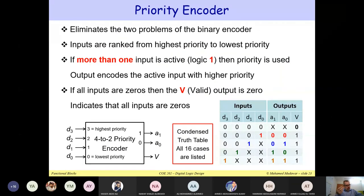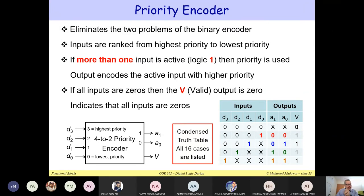In order to resolve these two problems of the encoder, we need something new called a priority encoder. The priority encoder eliminates the two problems of the binary encoder. In the binary encoder we had a restriction that exactly one input must be one and all remaining inputs are zeros.